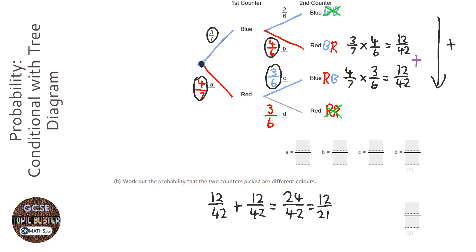So we add the tops together to get 24 over 42. Simplifying: divide both by 2 to get 12 over 21, then divide both by 3 to get 4 over 7. So the answer is 4 over 7.